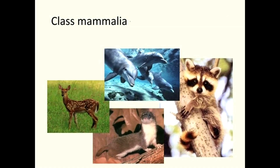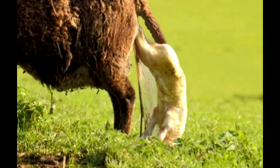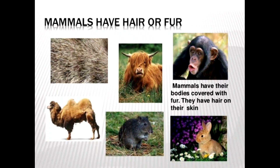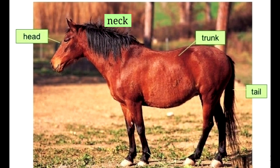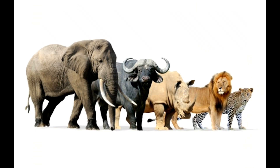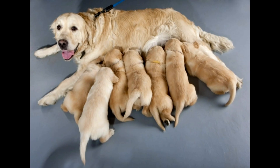Class Mammalia. Animals of Class Mammalia directly give birth to their young ones. Their body is covered with hair or fur. They breathe through lungs. Their body is divided into head, neck, trunk and tail. They have two pairs of limbs for movement. They have mammary glands and feed milk to their babies.